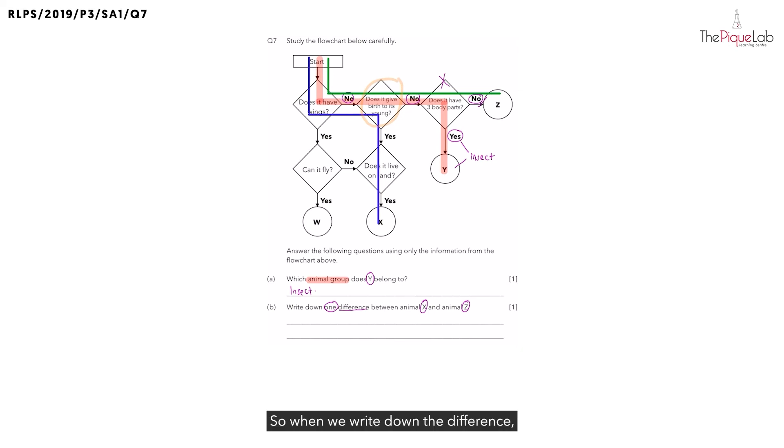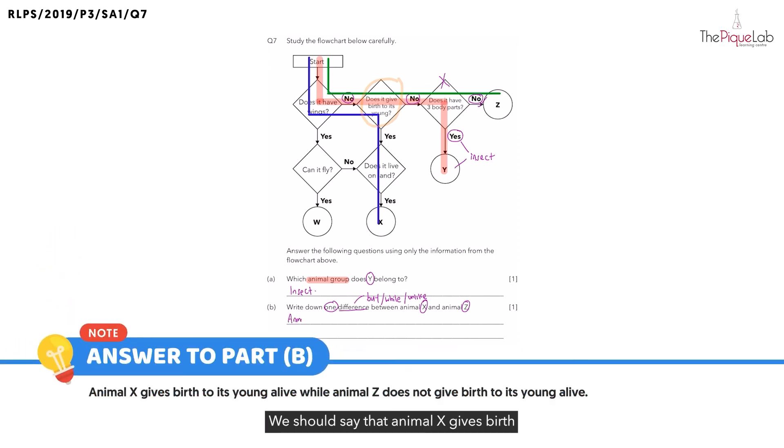So when we write down the difference, remember there are certain keywords that examiners are looking out for. When we talk about difference we need to use keywords such as the word 'but', or are there any other keywords you can think of? Yes, we can also use the word 'while' or even the word 'unlike' because these keywords tell the examiner that you are writing a difference. So how should we phrase our answer for this question? We should say that animal X gives birth to its young alive, and remember what keyword must we use? We can use the keyword 'while', animal Z does not give birth to its young alive. And that is the answer for part B.